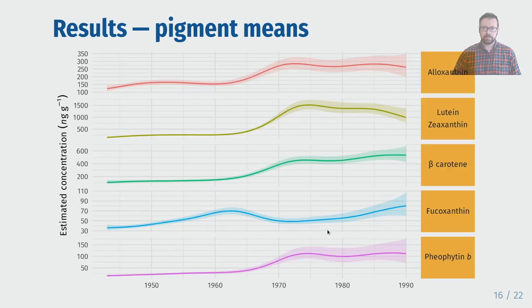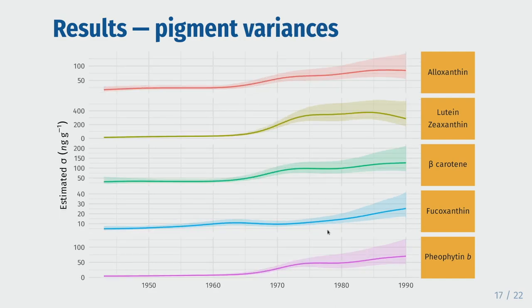Here are the results. This plot shows the estimated mean concentration for the five pigments estimated from the model, which shows the increase in algal abundance during the experimental manipulation that was apparent in the data. More interestingly, here I'm showing a plot of the variances of the pigment time series over time that were estimated from our model. We clearly see the increased variance in the algal communities that Cottingham et al. observed, but now we can provide continuous estimates of the variance over time, rather than having to split the data into two and compare the variance of the two time series.